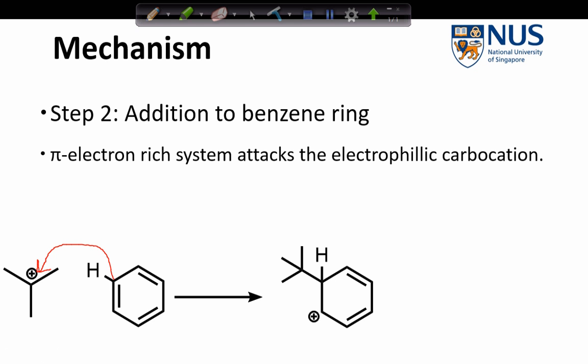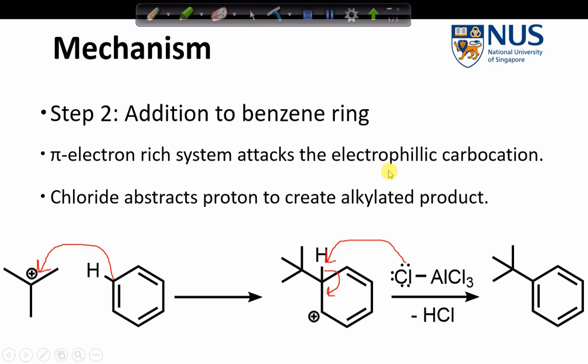So now we have a carbocation transition state, but then this undergoes re-aromatization by abstraction of the proton by the halide that was added to the acid catalyst. And then we get re-aromatization of the ring, and as a result we get our alkylated product.